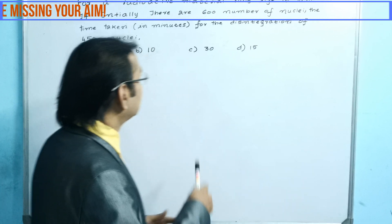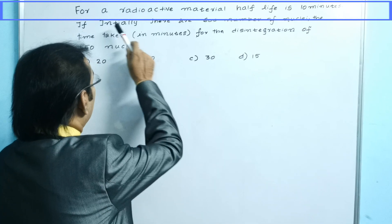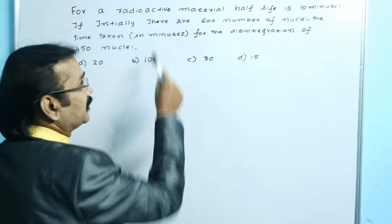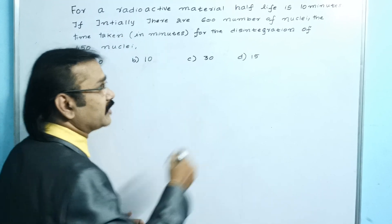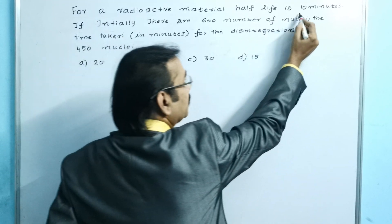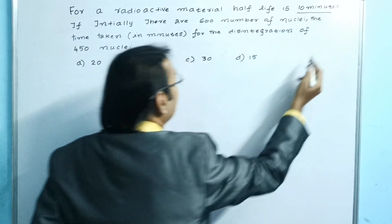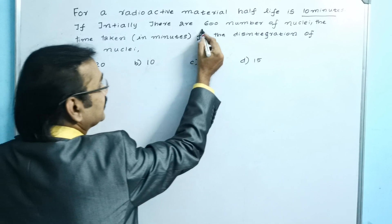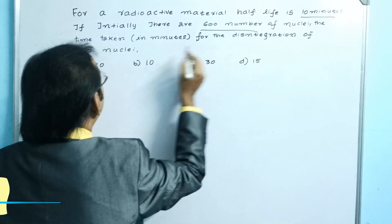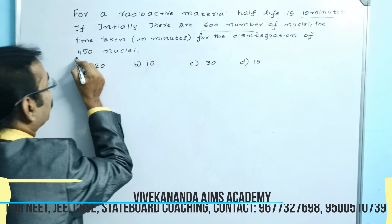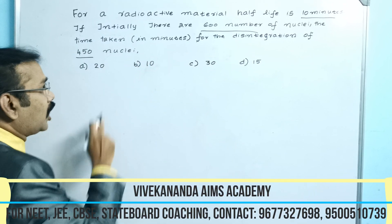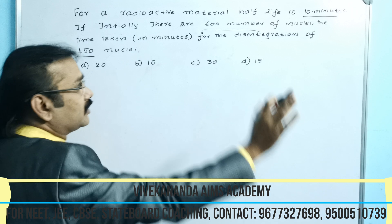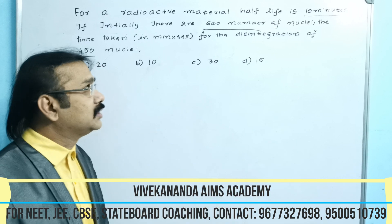To go into this shortcut session, if you see the question, for the radioactive material the half-life is 10 minutes. He has given two key numbers: one is 600 and the other one is 450, and the options A, B, C, D are being given.